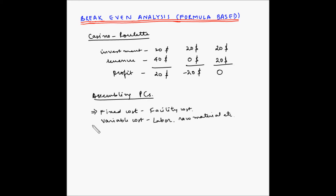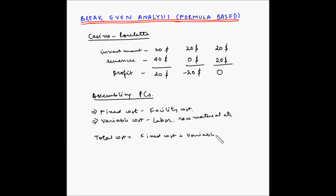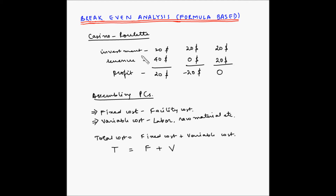We have understood what is fixed cost and what is variable cost. When we combine the two, we get the total cost. Total cost (T) is equal to fixed cost (F) plus the variable cost (V). This total cost is analogous to the initial investment of $20 which you made on the roulette table in the casino.